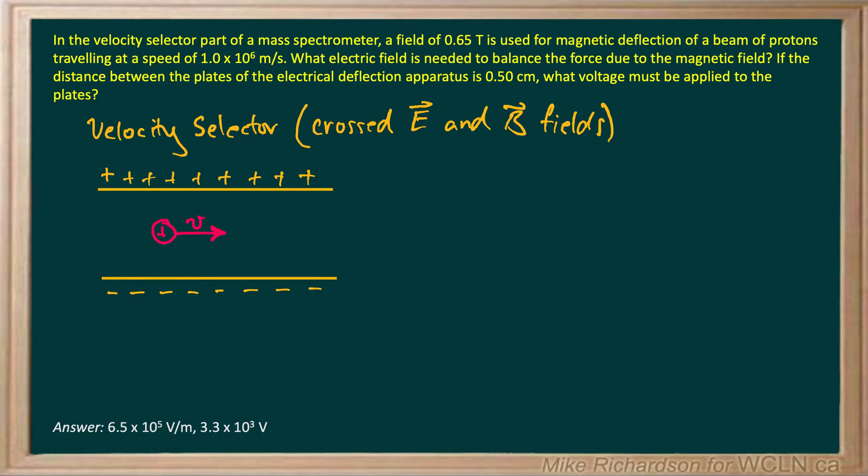In the velocity selector part of a mass spectrometer, a field of 0.65 teslas, so that's a magnetic field, is used for the magnetic deflection of a beam of protons as they travel at a speed of 1.0 times 10 to the 6 meters per second.